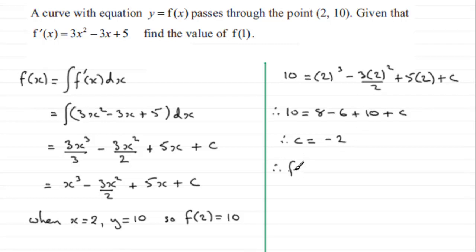So that means that therefore f(x) in general is going to equal x³ - 3x²/2 + 5x, and then the constant is now -2.